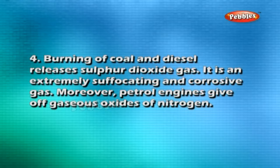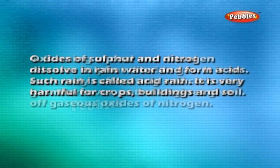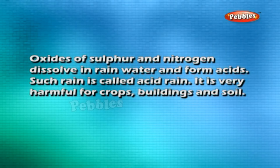Burning of coal and diesel releases sulphur dioxide gas, which is an extremely suffocating and corrosive gas. Moreover, petrol engines give off gaseous oxides of nitrogen. Oxides of sulphur and nitrogen dissolve in rain water and form acids — such rain is called acid rain. It is very harmful for crops, buildings, and soil.